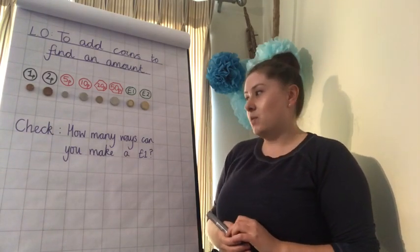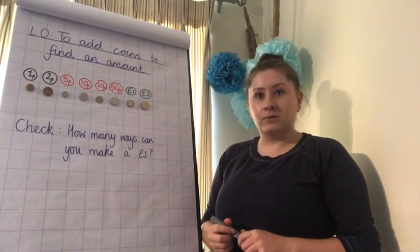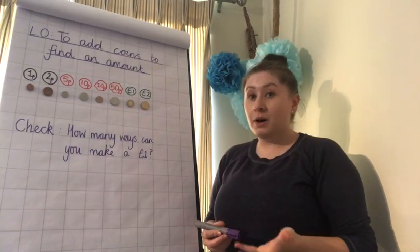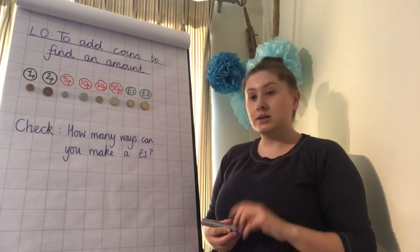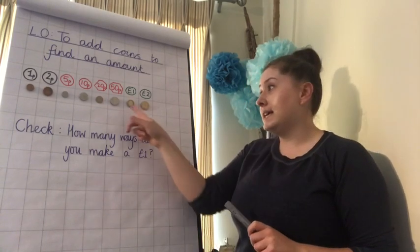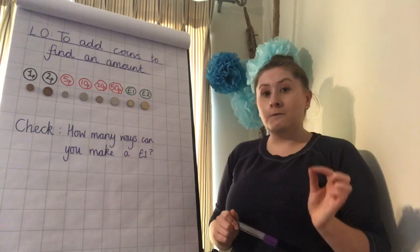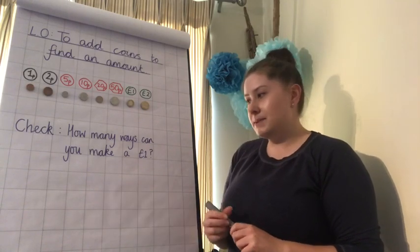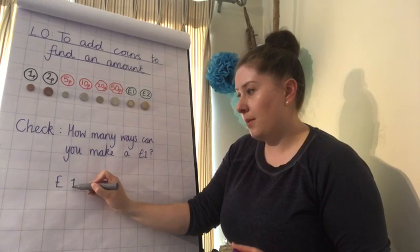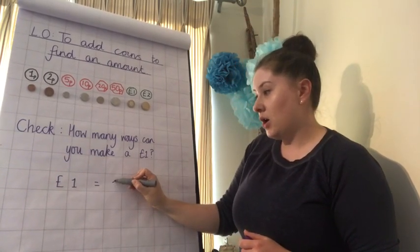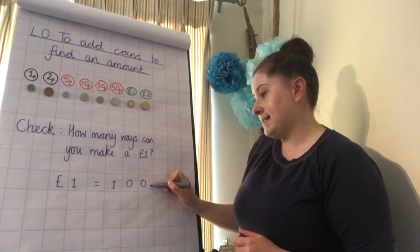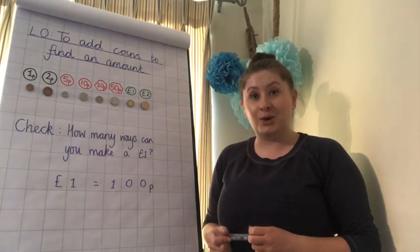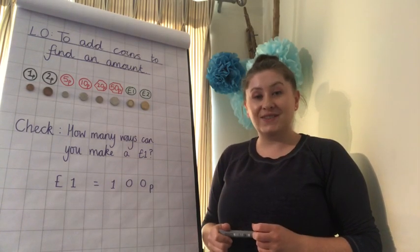So we're going to start with a checkpoint. How many ways can you make £1? Now this is my 1p coin here, but I could use some of the other coins to make a pound as well. I might need to use some of the coins more than once. I'll start you off: 50p add 50p makes 100 pennies, which is the same as a pound. So a £1 coin equals 100 pennies. See if you can use that to help yourself. How many ways can you make a pound? Pause the video. Off you go.